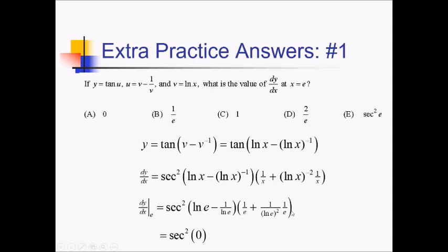Over here, this is going to be 1 over e plus, since ln of e is 1, this is really 1 over 1 squared times 1 over e. So this is 1 over e plus 1 over e, which is 2 over e. Secant of zero is 1 over cosine of zero. Cosine of zero is 1, so secant squared of zero is just 1. Multiply that by 2 over e, you still have 2 over e. That ends up being answer choice D.